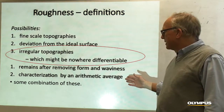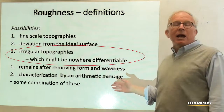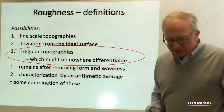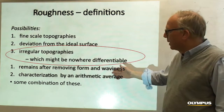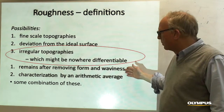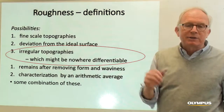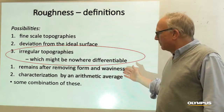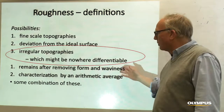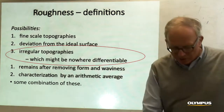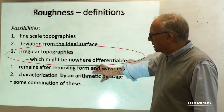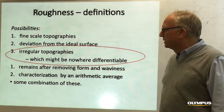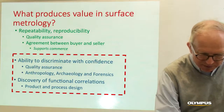Roughness could also be what remains after removing the form and waviness, and something that could be characterized by an arithmetic average. Very often people just say, here's the arithmetic average. These are different kinds of irregular topographies — we take out form and waviness. Form might be the roundness in a ball bearing, for example, or the curvature in a shaft. And then the waviness is kind of in between the form and the roughness. What's of particular interest to us here is the irregular components of the topographies.